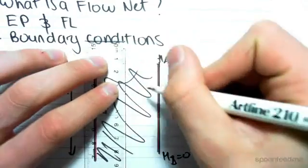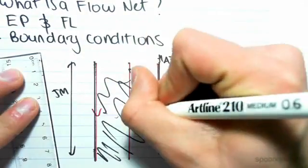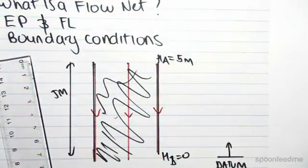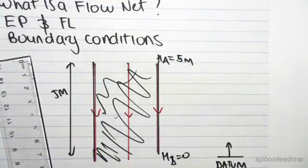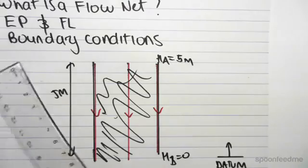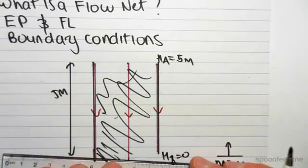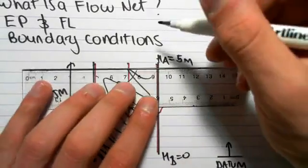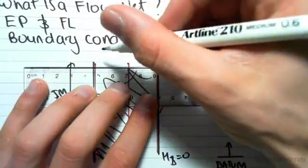It has something called flow lines, which are these red lines. They just show the water, how it flows through. And then we also need to show something called an equipotential line. An equipotential line is just a line which shows points of equal head.